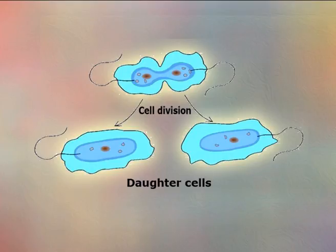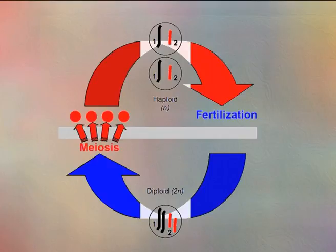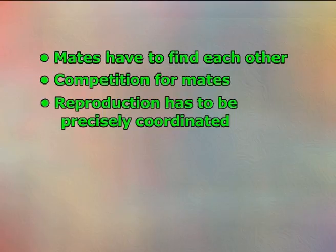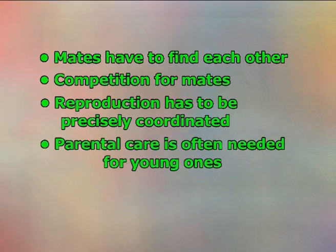There are numerous strategies in between. The diversity of reproductive structures, physiology and behaviour seems to exceed that of any other system. Asexual reproduction is energy efficient — that is, low reproductive effort — as it involves only one animal. Sexual reproduction on the other hand is more complex and therefore needs much more energy. This is because mates have to find each other, there is competition for mates, reproduction has to be precisely coordinated, and parental care is often needed for young ones.